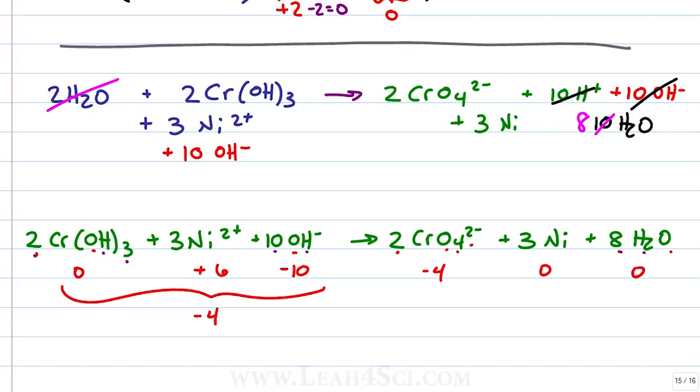Nickel solid is 0, water is 0 for a net of -4. -4 equals -4, add your phases back in and you're good to go.